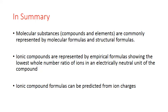In summary, molecular substances — both compounds and elements — are commonly represented by molecular formulas and structural formulas. Ionic compounds are represented by empirical formulas showing the lowest whole number ratio of ions in an electrically neutral unit of the compound. Ionic compound formulas can be predicted from ion charges using the crisscross method.